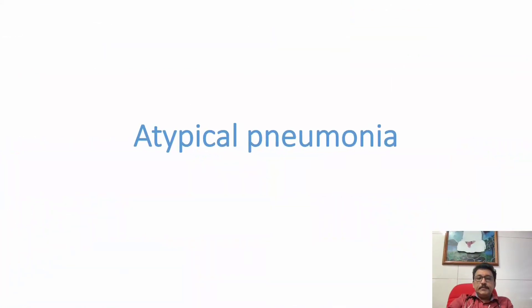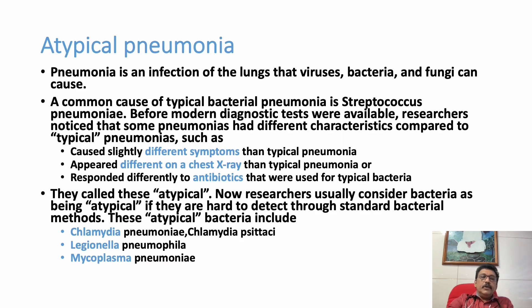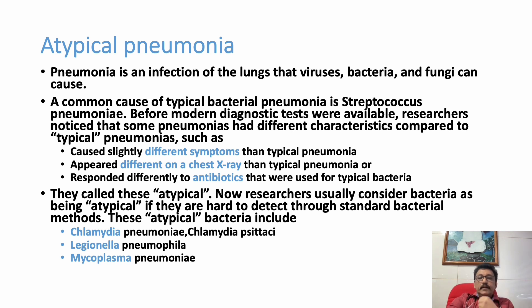Welcome to ATSim, the emergency medicine channel. Today let us discuss one important type of pneumonia — atypical pneumonia. Pneumonia is the infection of lung parenchyma; it can be due to viruses, bacteria, fungus, and sometimes non-infectious causes. In community-acquired settings, it is commonly produced by Streptococcus pneumoniae, which is the common pneumonia we come across in daily practice.